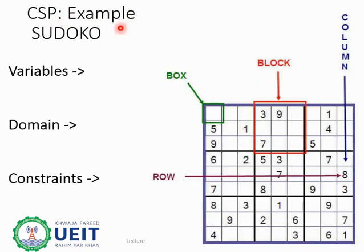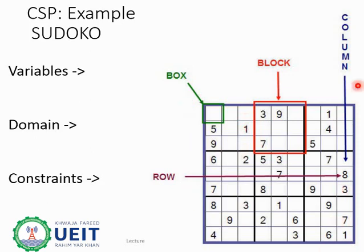Let's look at solving a constraint satisfaction problem through a worked example. Sudoku is a game in which initially you are provided with a grid where some boxes are filled and some are left empty to be filled by the player. Sudoku games involve a grid of 81 squares. The grid is divided into 9 blocks, each containing 9 squares. A total of 9 blocks in the whole grid, each containing 9 boxes or cells. Initially the player is provided with some filled information.